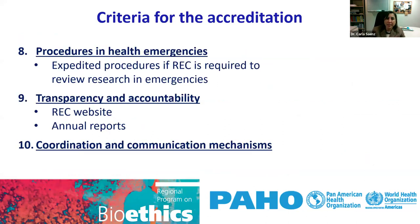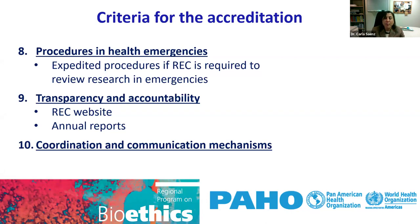Sixth, the review process — which covers the types of review, the ethical basis for analysis, review strategies, mechanisms for convening external experts, managing conflicts of interest, how meetings are handled, decision-making, the different types of decisions a committee can issue, ways to communicate decisions, and deadlines. Seventh, monitoring of ongoing research — covering extension of approvals, management of adverse events, amendments, progress reports, and the final report. The last criteria are: eighth, procedures in health emergencies, including expedited procedures; ninth, transparency and accountability, including the existence of a committee website and development of annual reports; and tenth, coordination and communication mechanisms — lessons learned from the COVID pandemic about improving ethics preparedness.